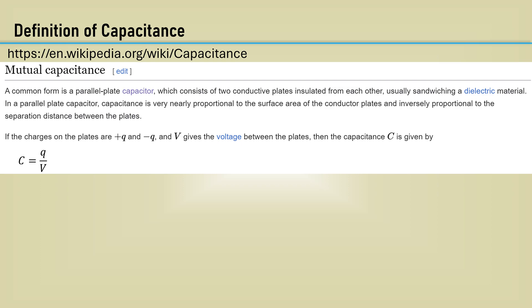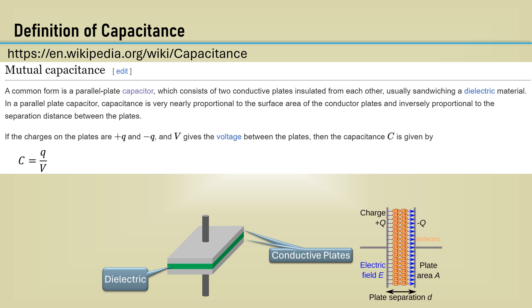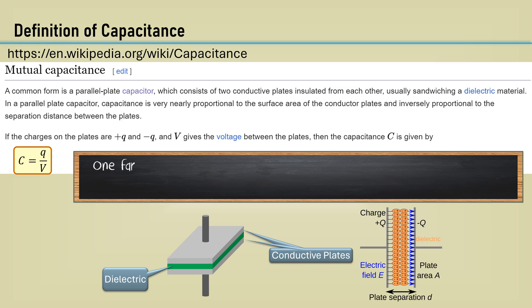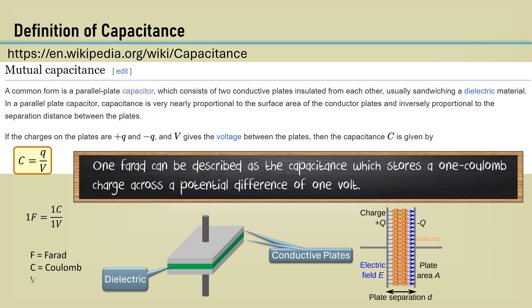Here is the Wikipedia page for capacitance. The capacitor is simply a dielectric sandwich between two conductive plates. The plates will have a specific area and separation between the plates. The charge on the plates will create an electric field. The capacitance, C, is equal to the charge, Q, over the voltage across it, V. One farad can be described as the capacitance which stores one coulomb charge across a potential difference of one volt. Therefore, one farad is equal to one coulomb of charge over one volt.